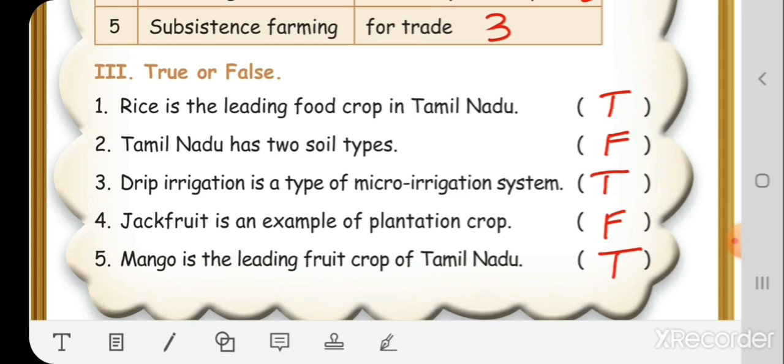Third one. Drip irrigation is a type of micro-irrigation system. True. Fourth one. Jackfruit is an example of plantation crops. False.